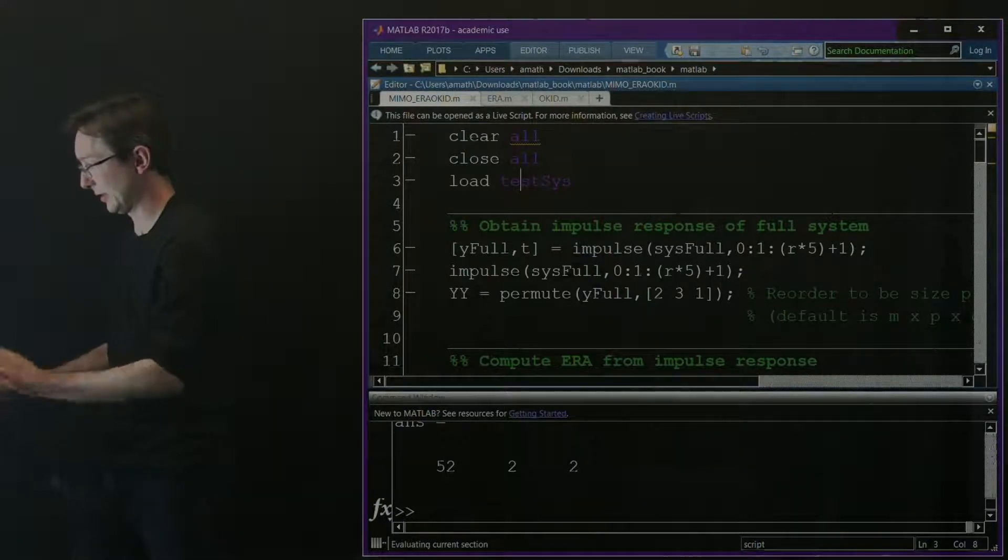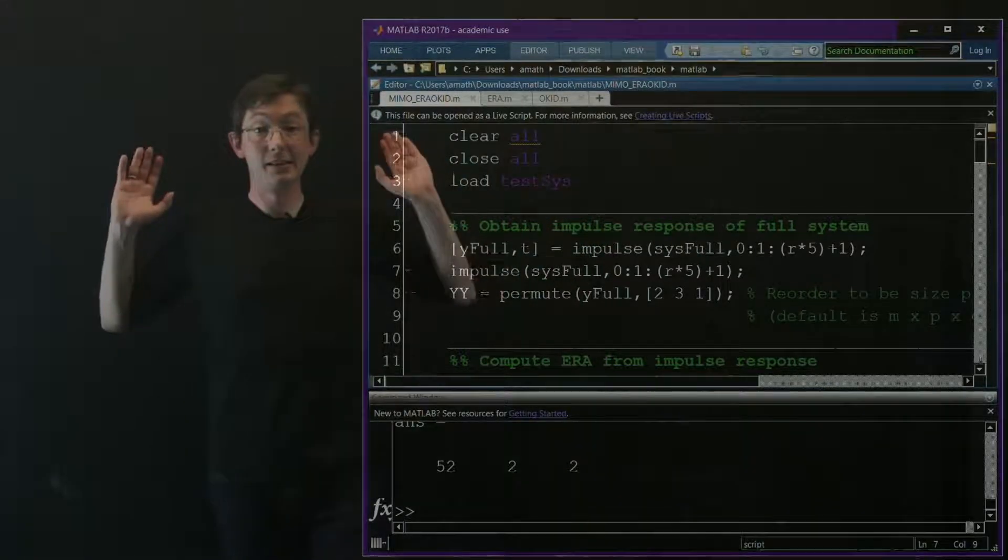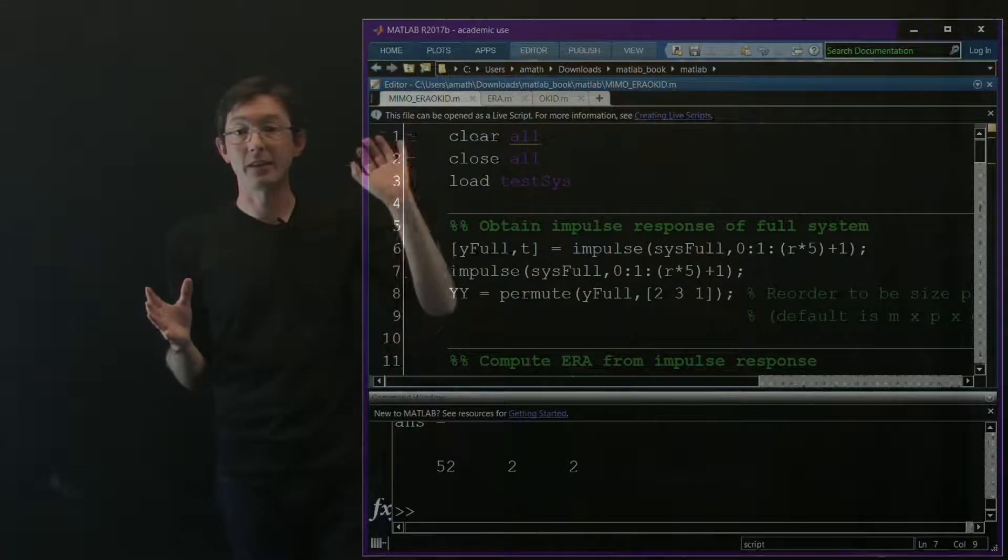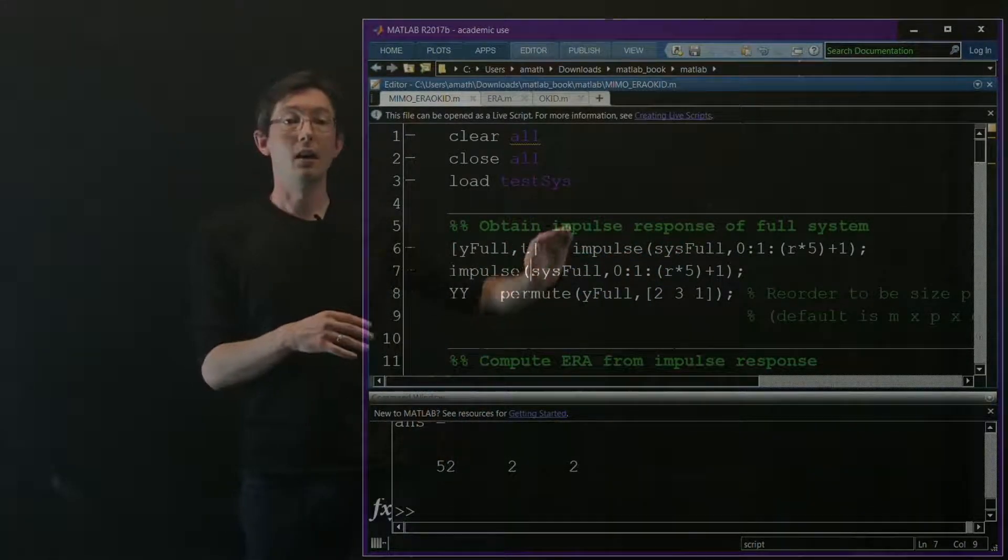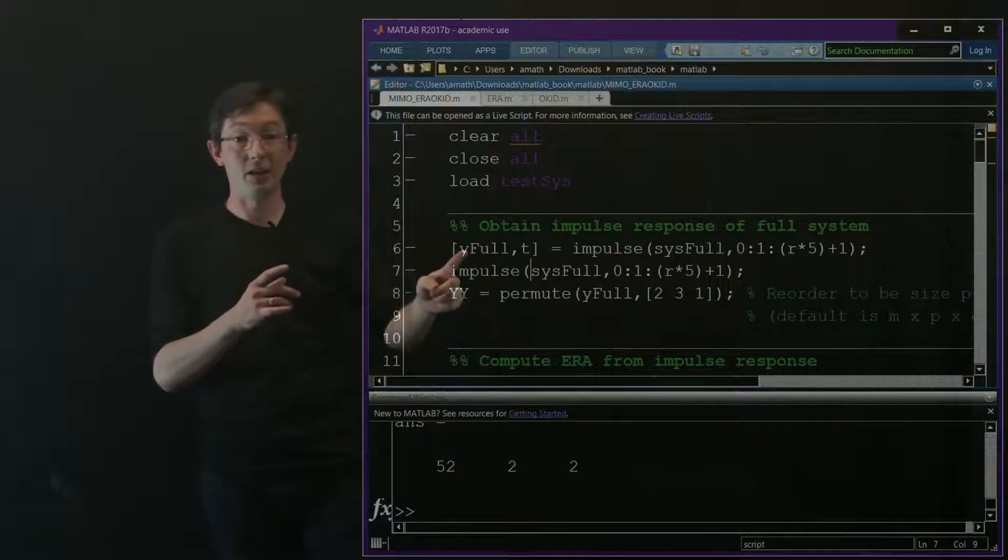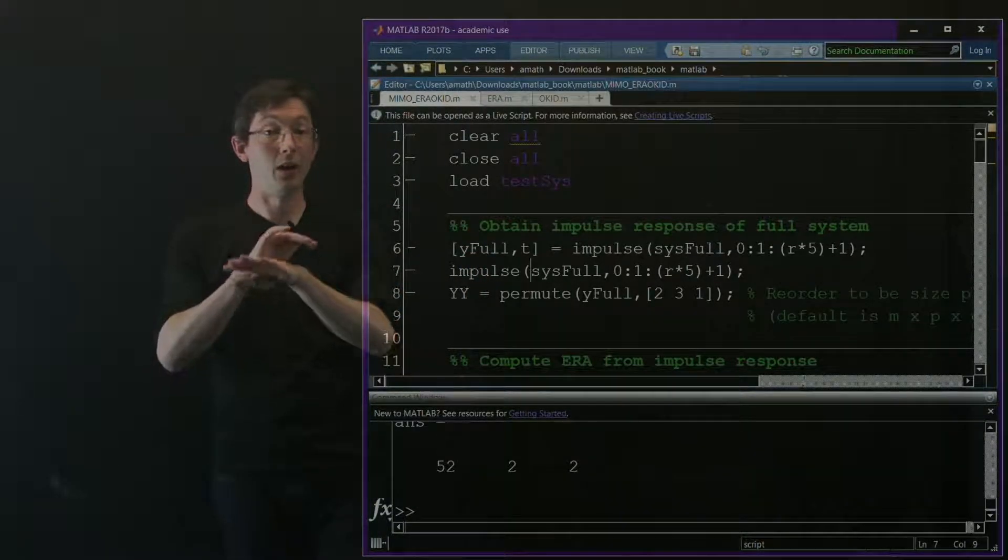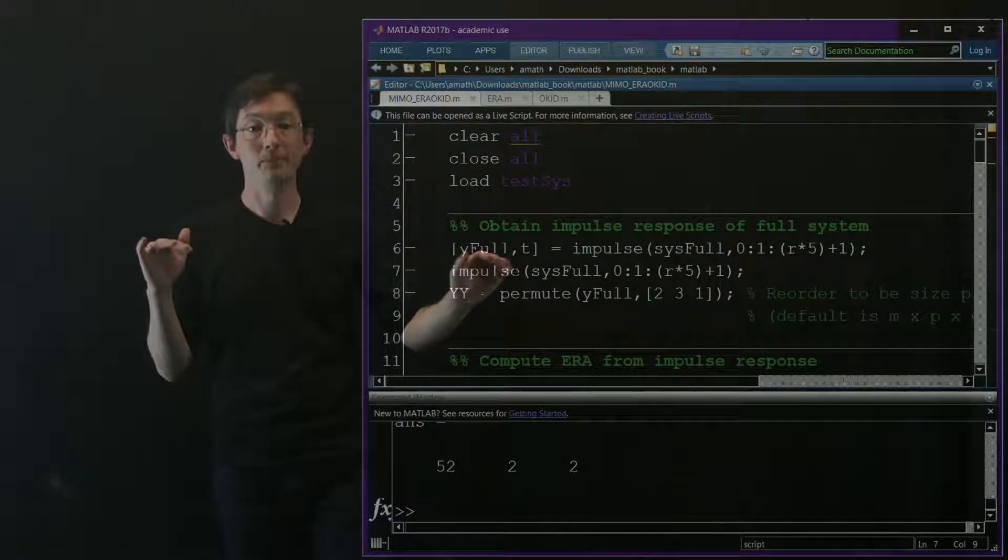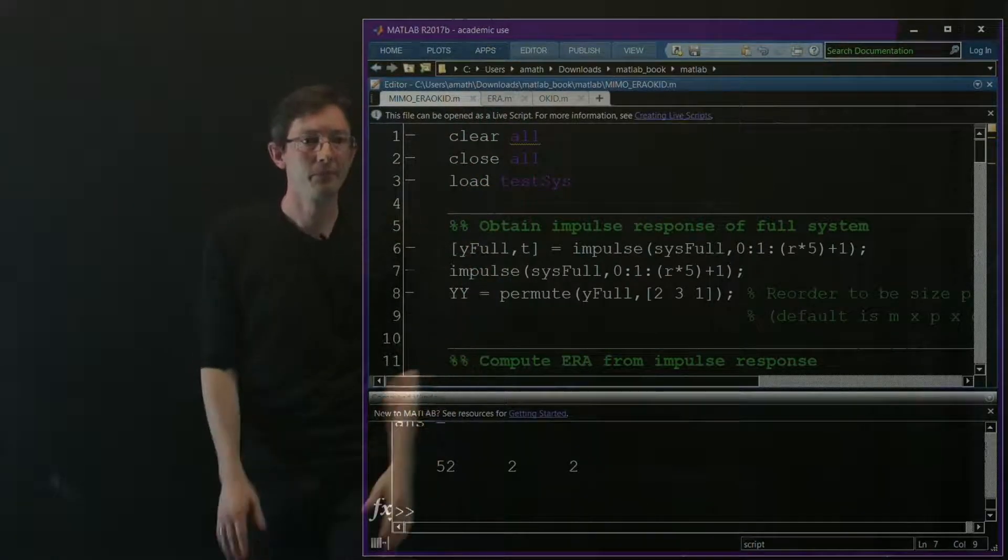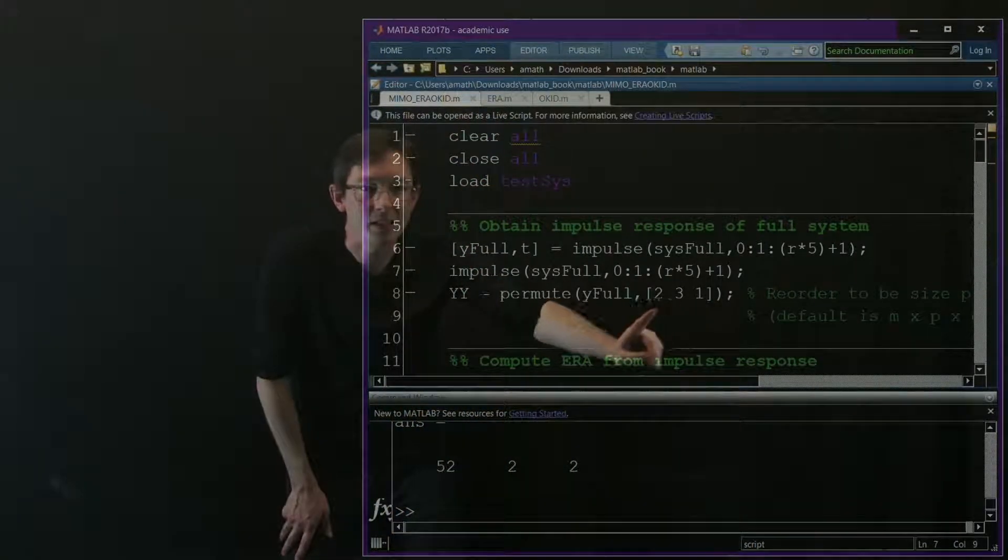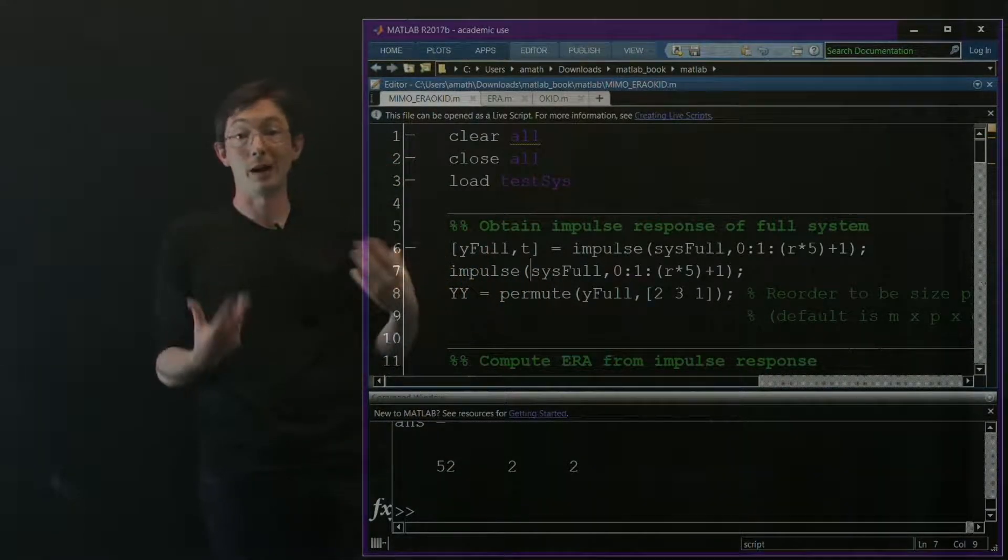Let's run this. I'm going to act like all I have is data - I don't have access to the model matrices A, B, C, D. I'm going to run an impulse on the full system and collect that data in yfull. That's the only data I have access to with ERA - measurements of yfull. Then I'm re-running impulse without the output just so it plots to the screen. There's some funky stuff here - I'm permuting this output because it's not the same shape I want for my code.